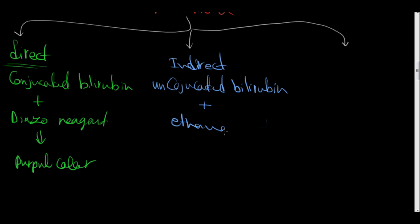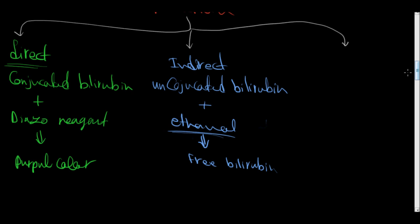First we will add ethanol and that will give us a free bilirubin. The ethanol function is to precipitate the plasma protein or the albumin.